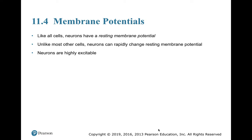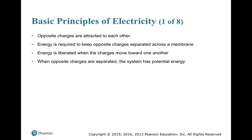Like all cells, neurons have a resting membrane potential. One of the differences between neurons and other cells is that they can rapidly change that membrane potential, which makes neurons highly excitable. That's why we say they carry out their functions using electrical signals — that electrical signal is a changing membrane potential.